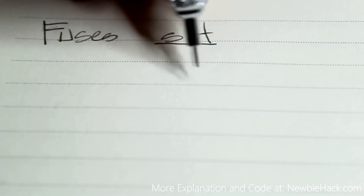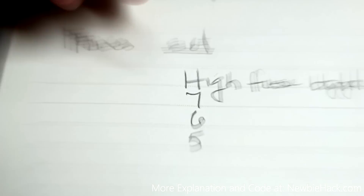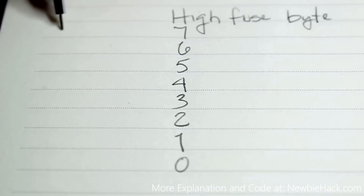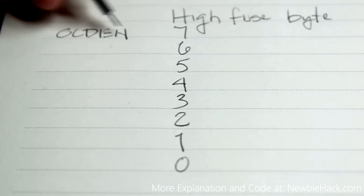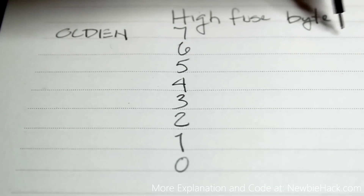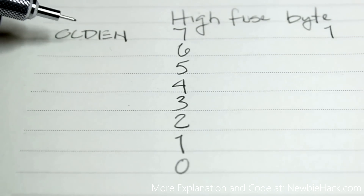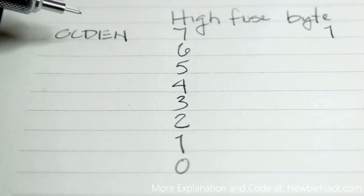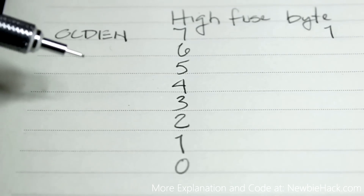I'll put the high fuse byte here and we'll go from bit number 7 to 0. The first bit is OCDEN, which is on-chip debugging enable. The default for this one is 1 — it's unprogrammed. 1 is equal to unprogrammed and 0 is equal to programmed. The on-chip debugging system allows a user to control the execution of a program on the actual controller, and it would be used in conjunction with a software simulator or in-circuit emulator.